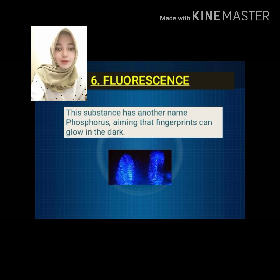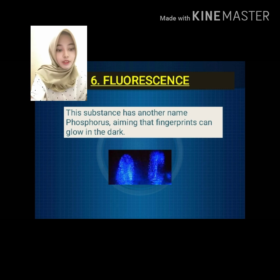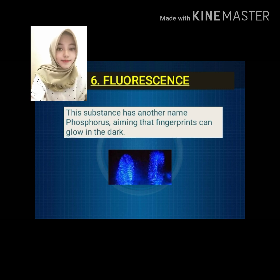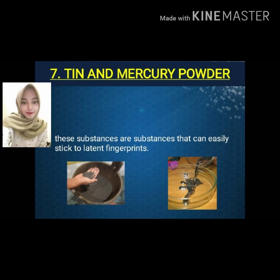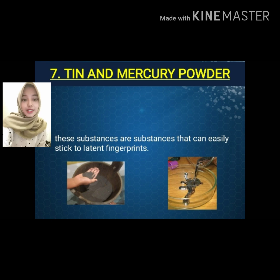Sixth, fluorescence. This substance has another name, phosphorus, used so that fingerprints can glow upon contact. Fluorescent powder is proof of fingerprints that stick to the surface of an object. Excess powder is cleaned with a brush, then it is illuminated with UV light at 360 nm. And the last method uses tea and mercury powder. These substances can easily stick to latent fingerprints. Four pictures demonstrating this can be seen on this slide.